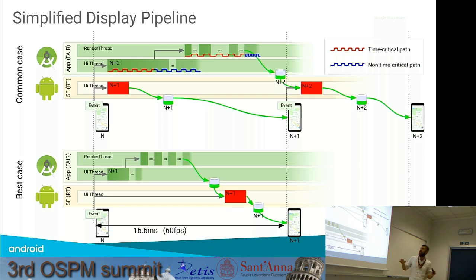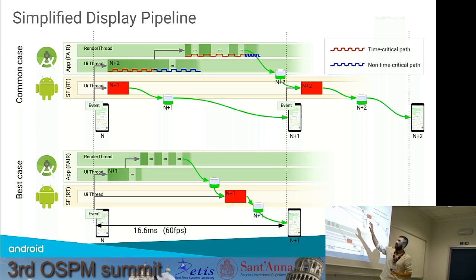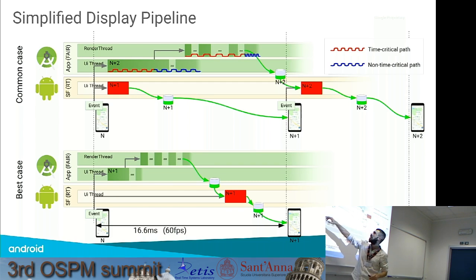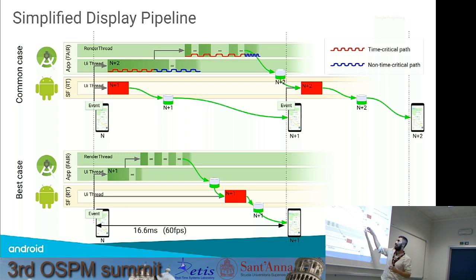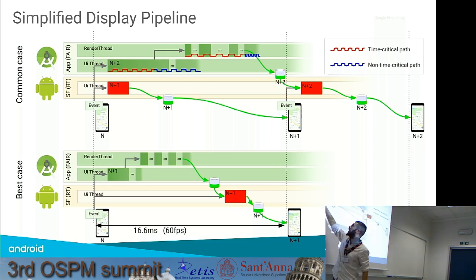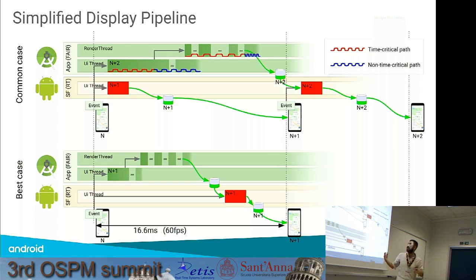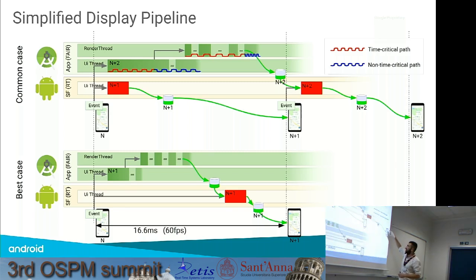Looking at the pipeline from a simplified view: when the display is showing frame N, Surface Flinger is already composing the buffers for frame N+1 to be shown at the next VSync event. Meanwhile, the application is already starting to work on and generating its pieces for frame N+2.